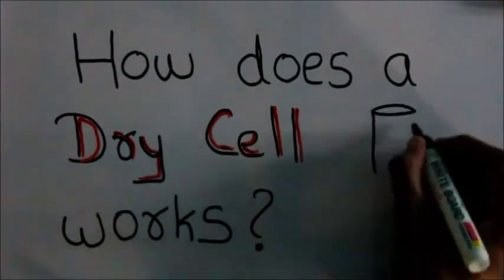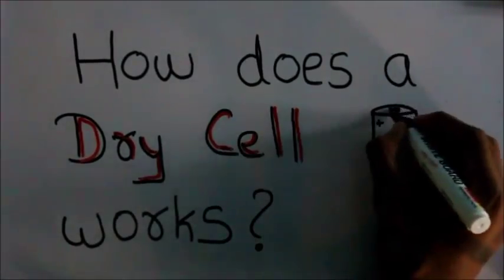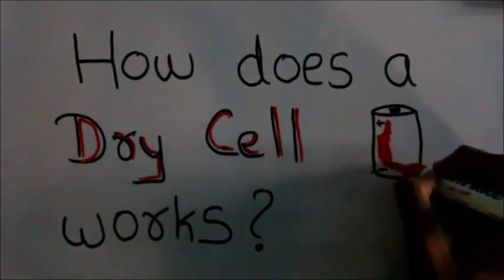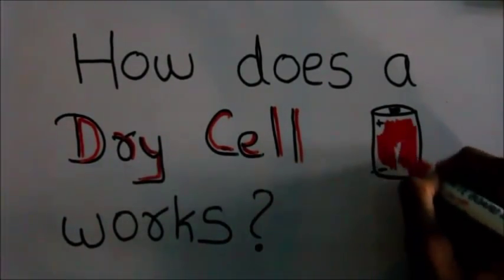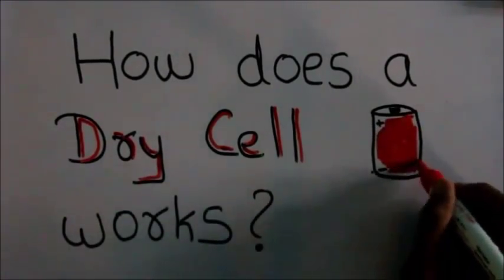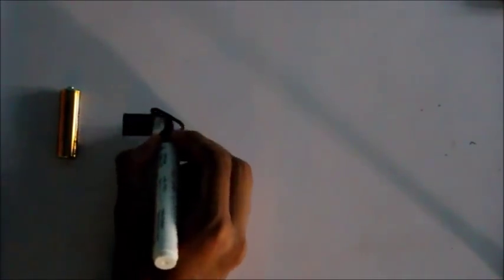It is called a dry cell because it does not contain any liquid components, and that is why it is very durable—its inner components do not spill out. So this is a dry cell. The inside of the dry cell looks like this.